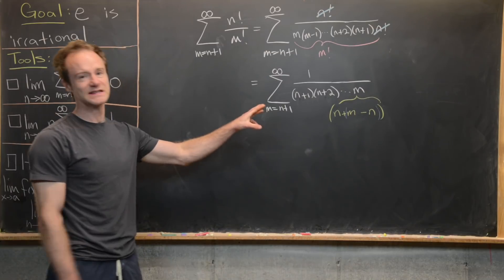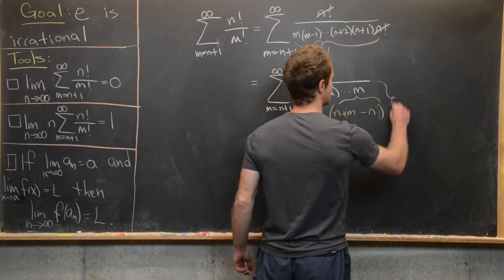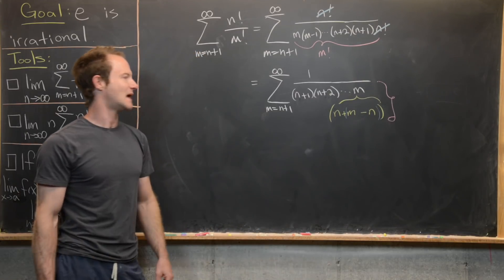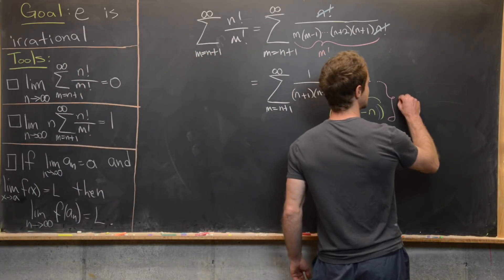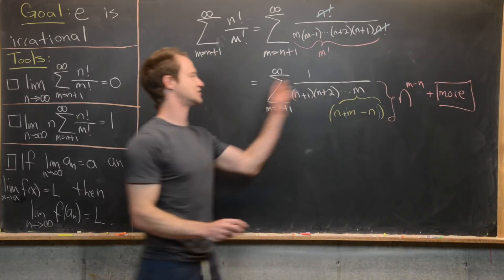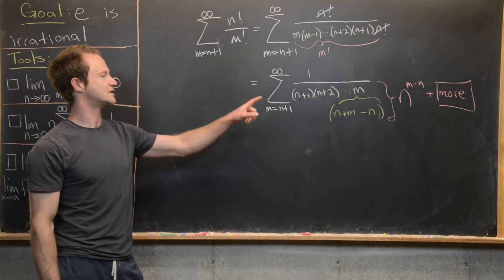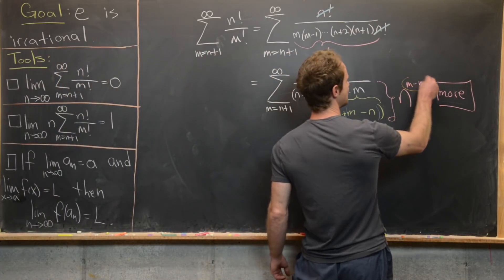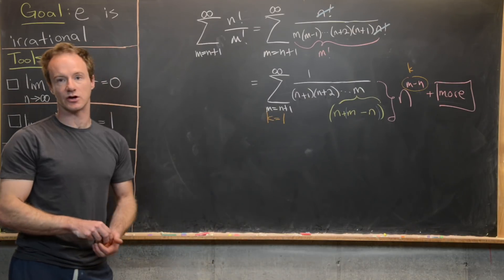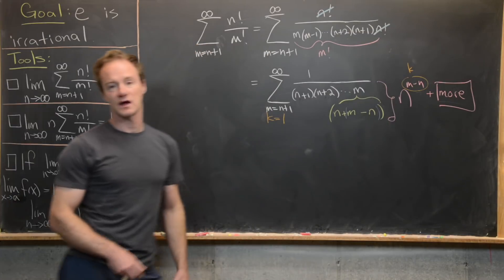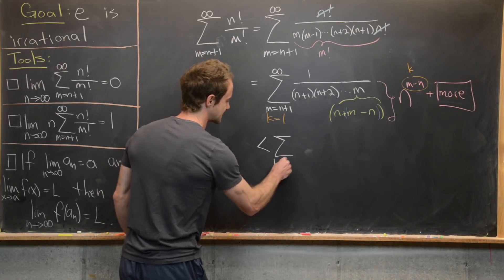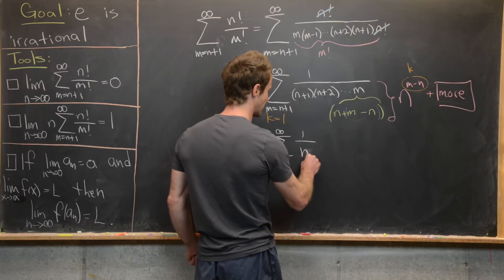If I multiply out that entire denominator, I have a polynomial in n. The degree of that polynomial is exactly m minus n terms, so I can write this as n to the (m minus n) plus more positive things. I'll re-index the sum by letting k equal m minus n, so k goes from 1 to infinity. Dropping the extra positive terms introduces a strict inequality: this is strictly less than the sum as k goes from 1 to infinity of 1 over n to the k.